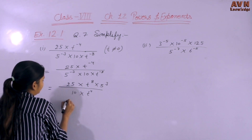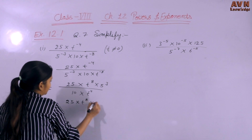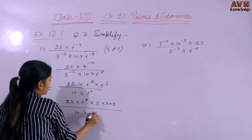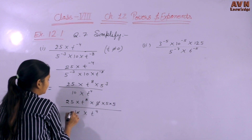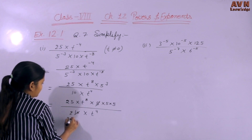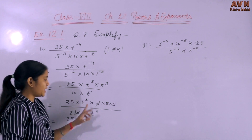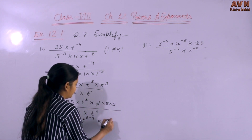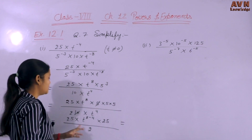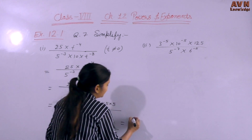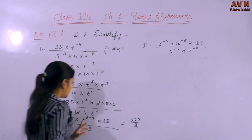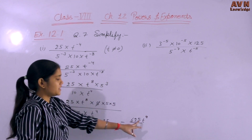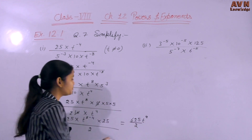So we have 25 multiplied by t^8 multiplied by 5^3, divided by 10 multiplied by t^4. Dividing 5 from 10 leaves 2. For t: t^8 divided by t^4 — subtract powers: 8 minus 4 = 4, giving t^4. For 5: 25 multiplied by 5^3 = 25 × 125 = 625 in numerator, with 2 in denominator. So the answer is 625 t^4 divided by 2.